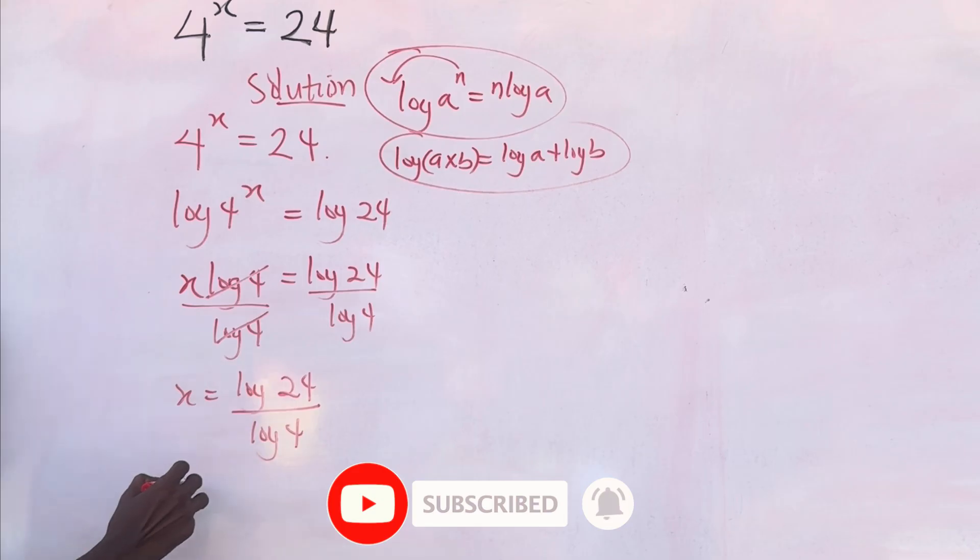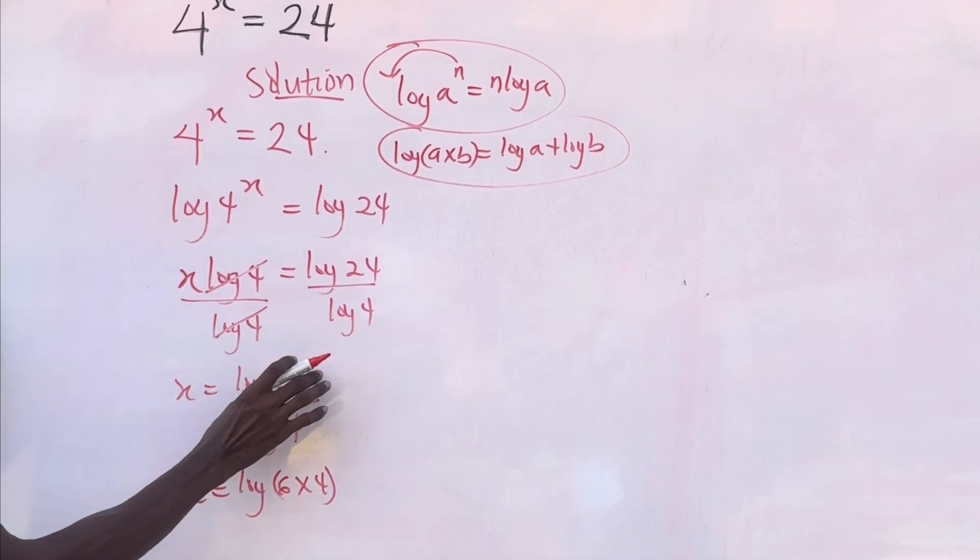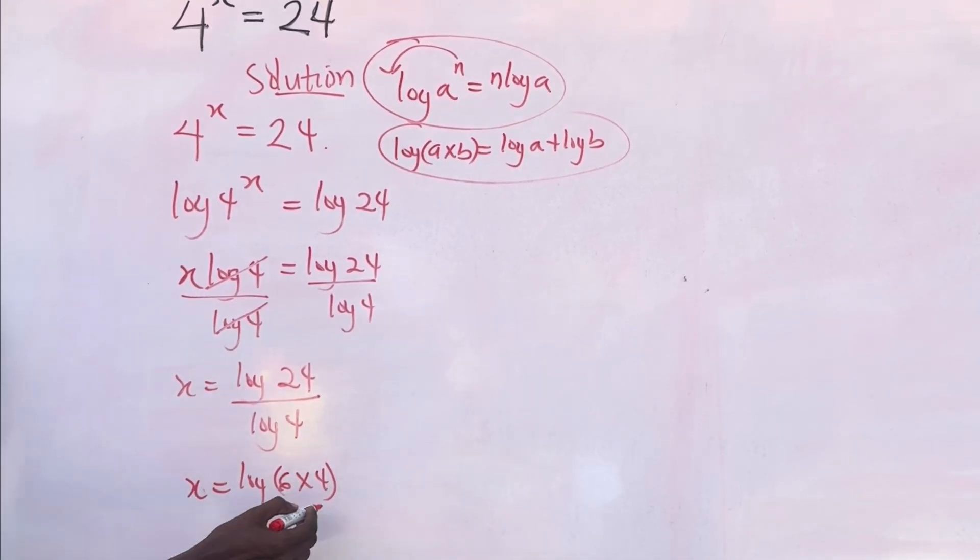So let's apply that here. So x would be log 6 multiplied by 4. 24 can be written as 6 multiplied by 4, right? Over log 4.